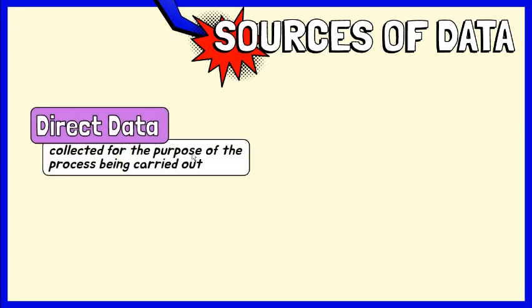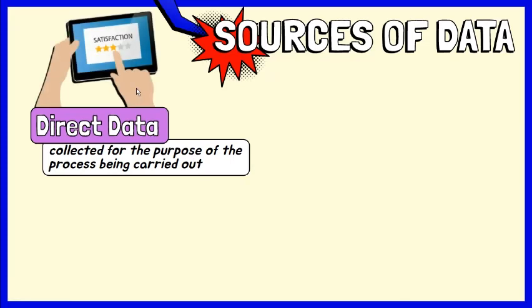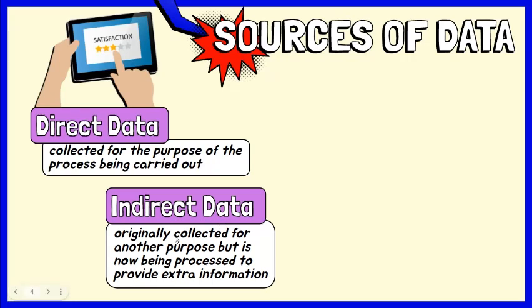The collection of data can be direct or indirect. Direct data is collected for the purpose of the processing being undertaken. For example, asking for feedback rating from customers for service improvement. On the other hand, indirect data was originally collected for another purpose, but is now being processed to provide extra information. For example, identified locations where the credit card has been used.